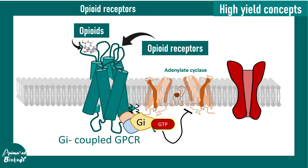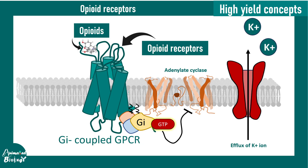In addition, these particular GPCR-coupled receptors can activate potassium channels, which lead to efflux of potassium ions outside the cell. How this is important in the context of physiology, we will get to know in this video.